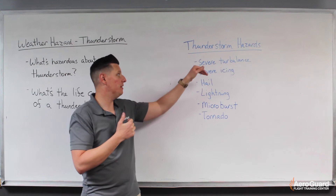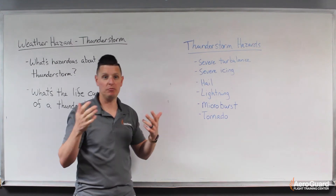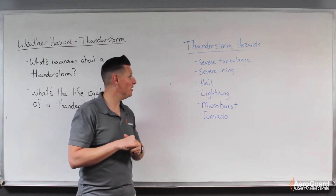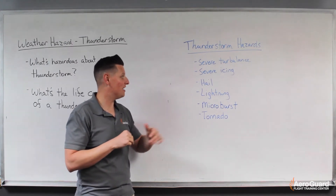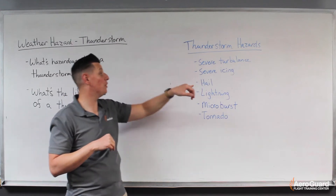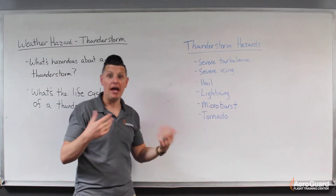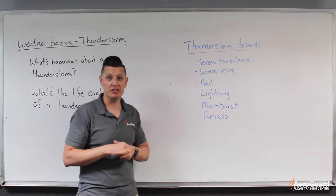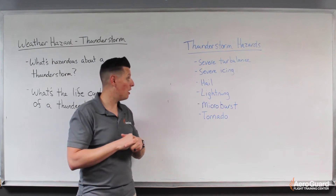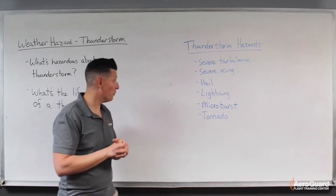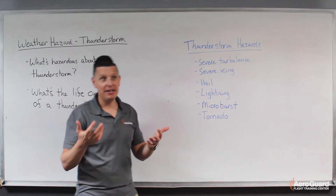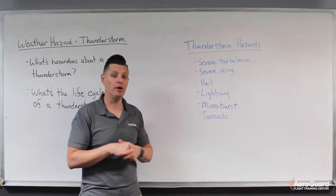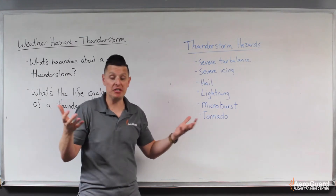This kind of turbulence could do enough damage to the aircraft that we could be structurally unsound. Also a big result of thunderstorms is hail — large pieces of ice that can cause significant damage to the skin of our aircraft as well. Lightning is another result of thunderstorms; it can cause disruption with electrical interference and can also potentially spark fires.